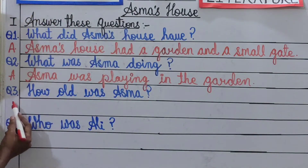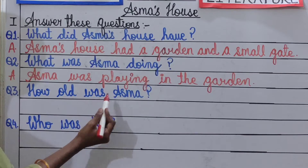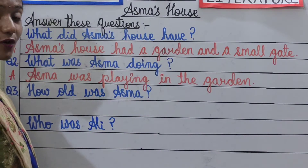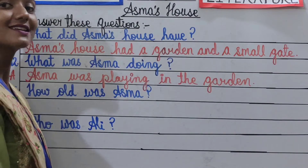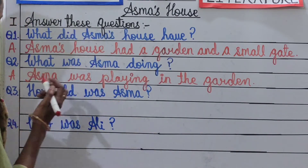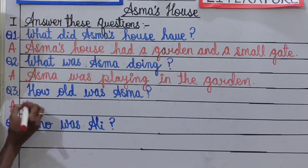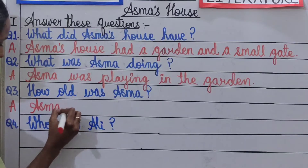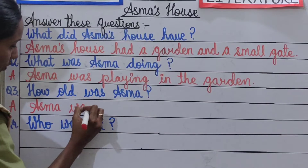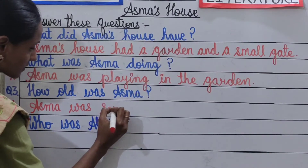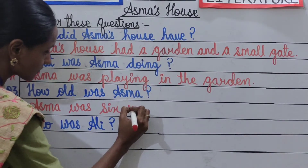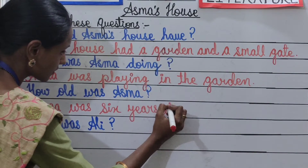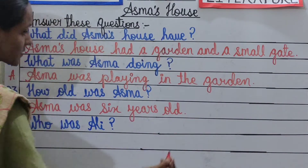Question number 3: How old was Asma? You have read the story and you very well know that Asma was 6 years old. Answer: Asma was 6 years old.